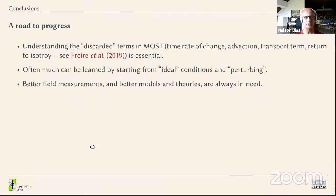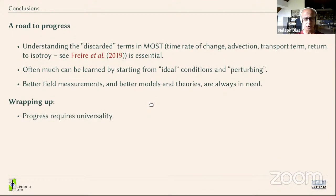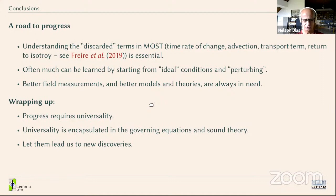I'll conclude briefly. We need to understand the discarded terms — transport terms, advection terms, etc. — and make progress towards understanding them. One way to do it is to start with ideal conditions and perturb them. Of course, we always need better measurements, better models, and better theories. To make progress, we need universality. Universality comes inevitably from the governing equations and good theories. So let us let the governing equations and good theories guide us towards new discoveries. Thank you very much for your attention.